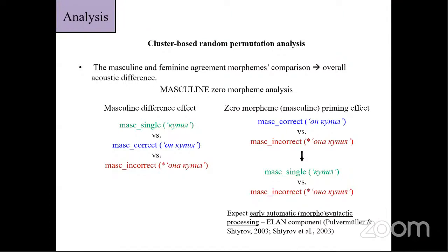We use cluster-based random permutation analysis for that. First, we tried to look at the masculine and feminine agreement markers together and compare them, but it showed only overall acoustic differences. So we tried to look directly at the conditions with zero morpheme. In our case, it's masculine marker.